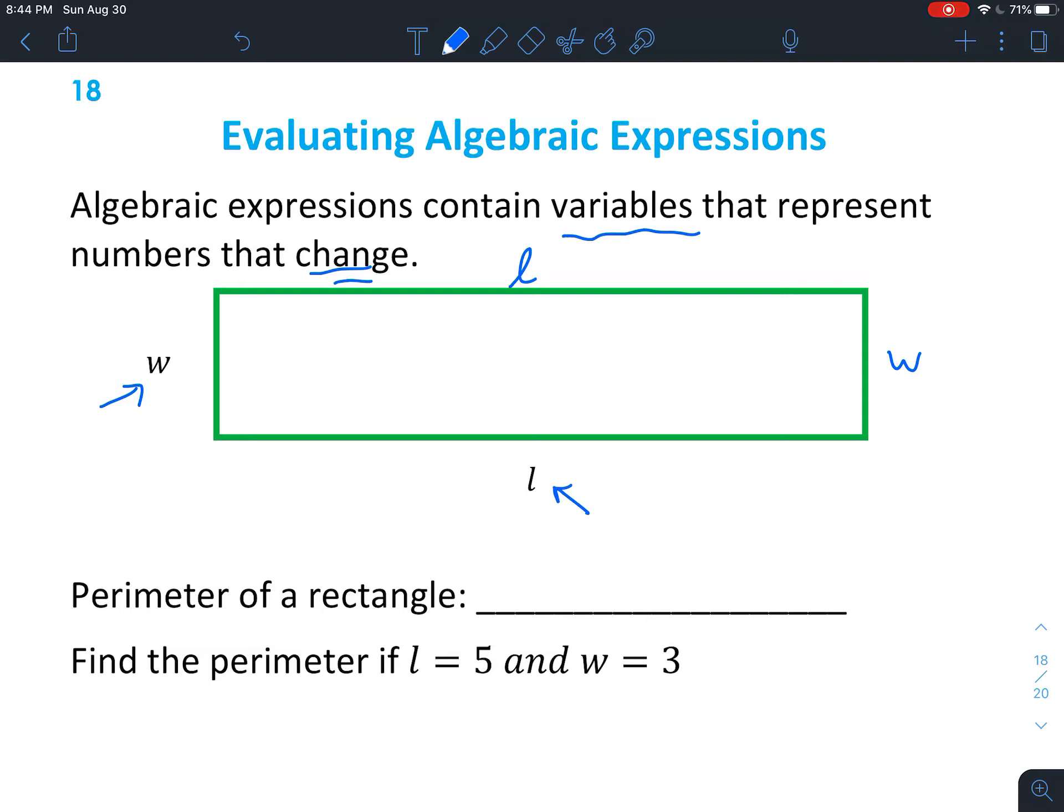So if you're talking about the formula for a perimeter of a rectangle, you'd say, well, we have two of the W lengths, plus we have two of the L lengths.